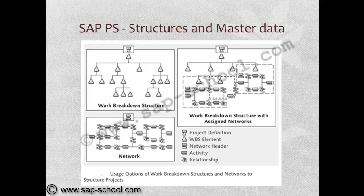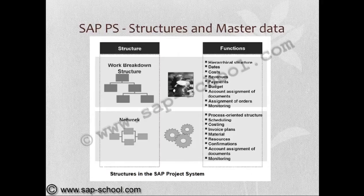Work breakdown structures and networks are used together to structure projects. The functions of work breakdown structures include hierarchical structure, dates, costs, revenues, payments, budget, account assignment of documents, assignment of orders, and monitoring. The functions of networks include process-oriented structure, scheduling, costing, invoice plans, materials, resources, confirmations, account assignment of documents, and monitoring.